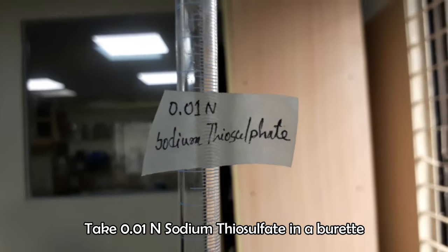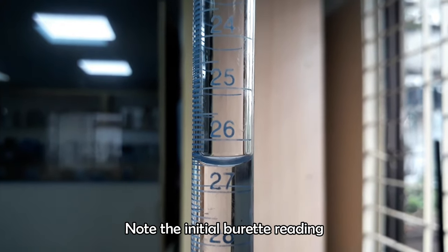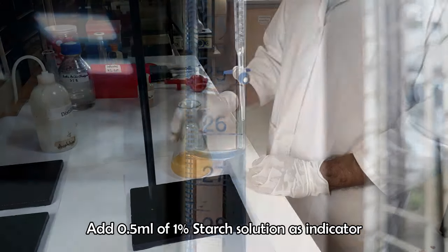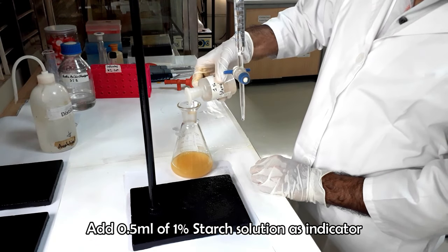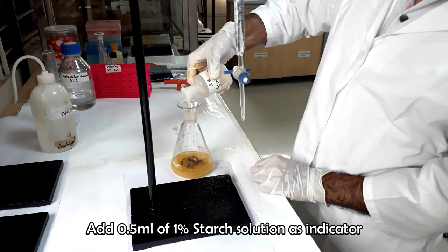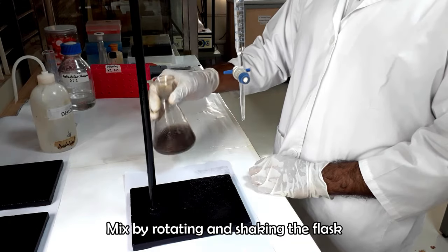Take 0.01 normal sodium thiosulfate in a burette. Take the initial burette reading. Start titration after adding 0.5 ml of 1% starch solution.